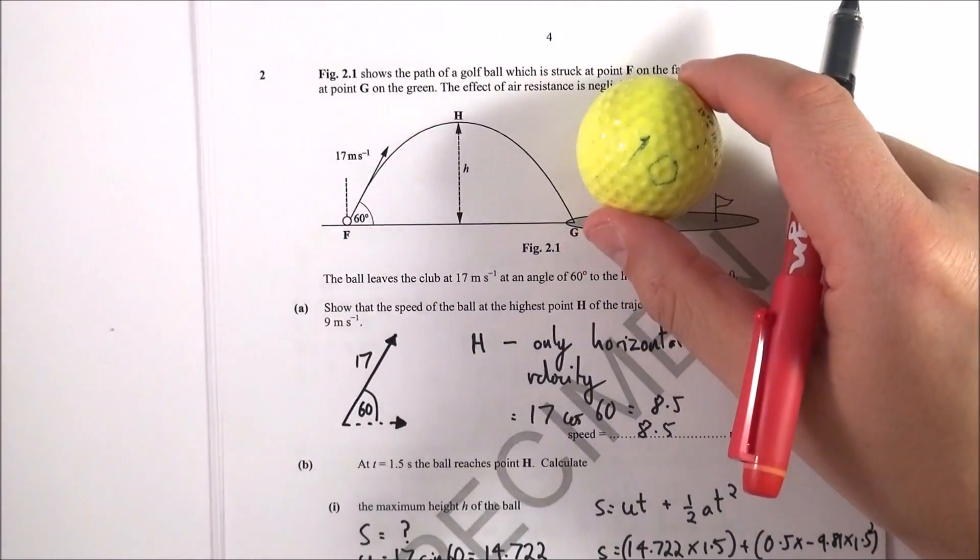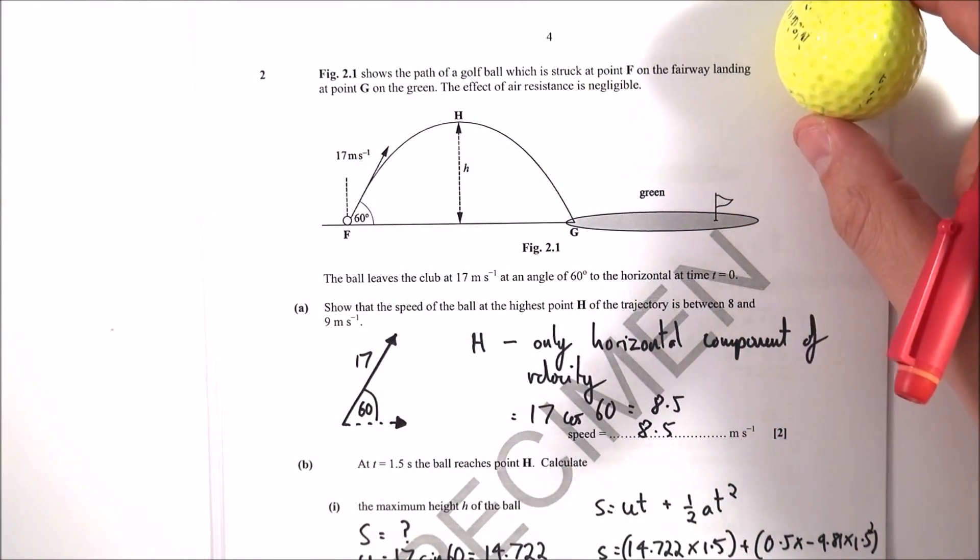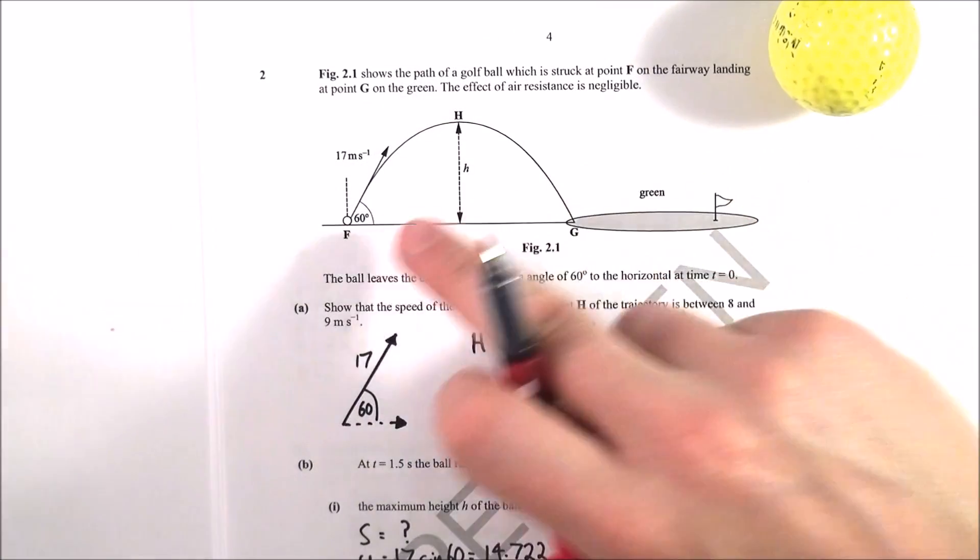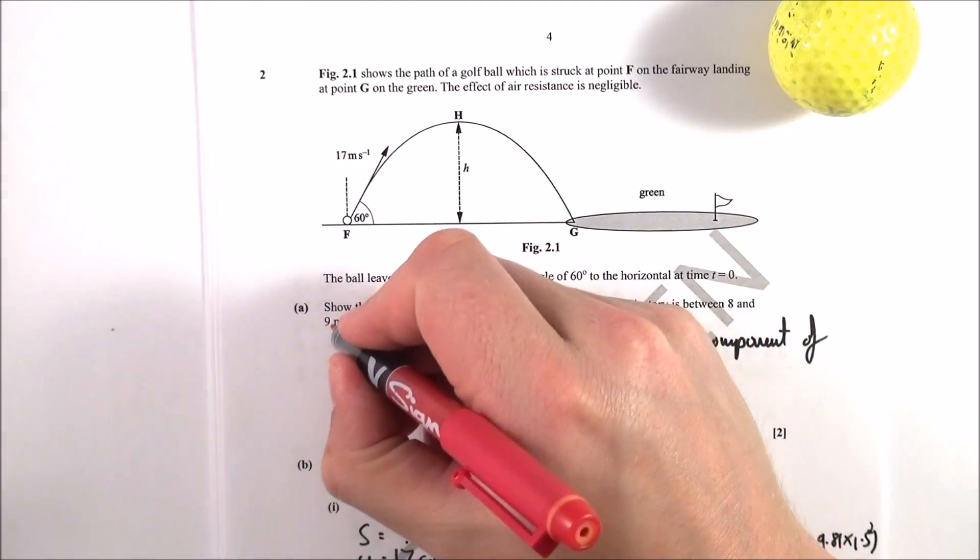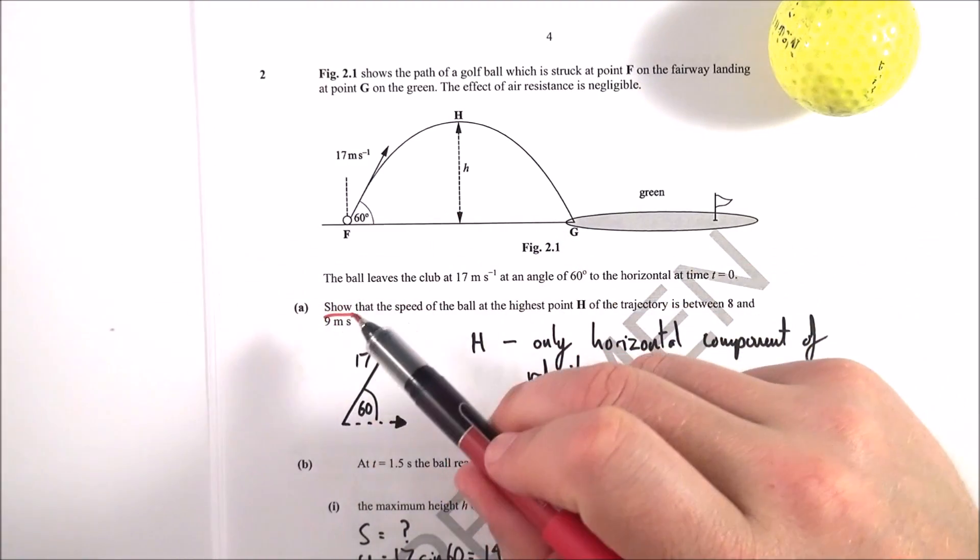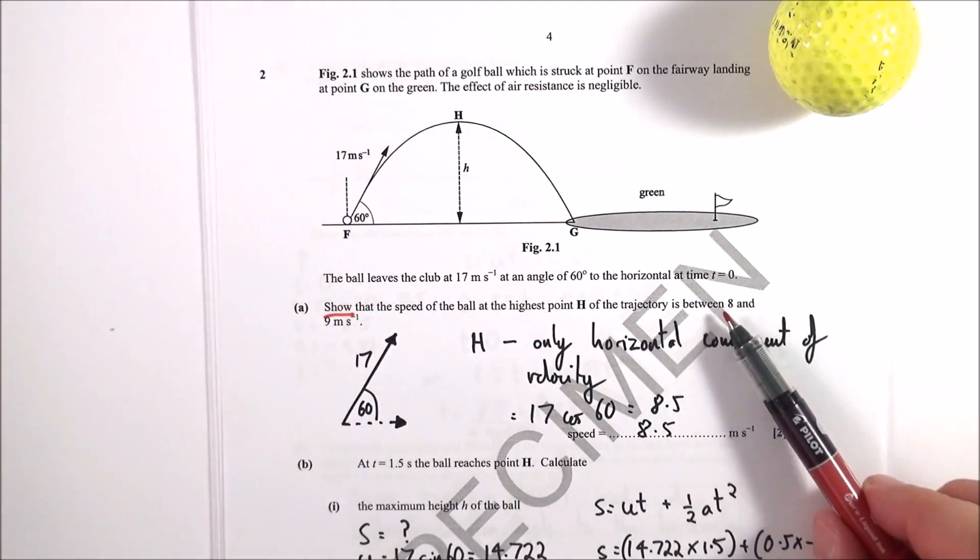Question two is all about a golf ball which is being hit by a club, and there's a picture here which is nicely given in the diagram, and you've got some data down here. The first question, part A, is a showing answer, so basically you know that the answer has to be between eight and nine.